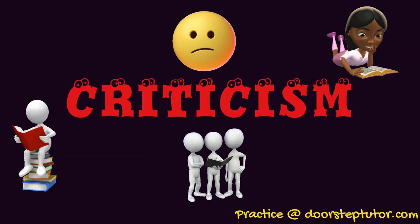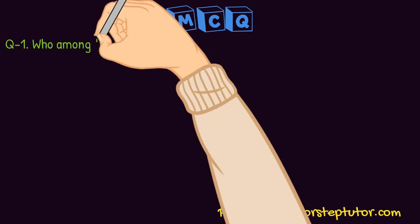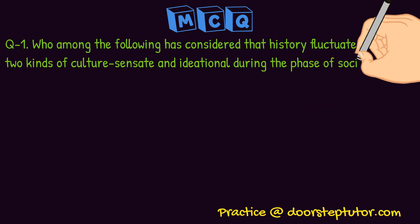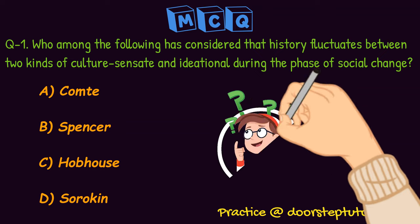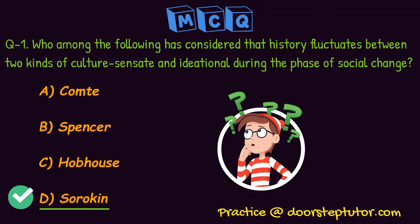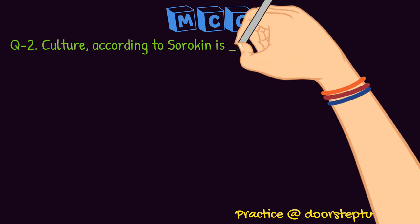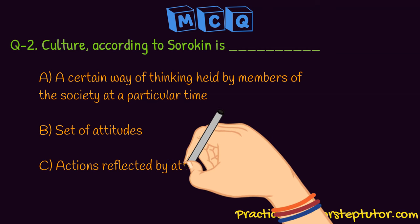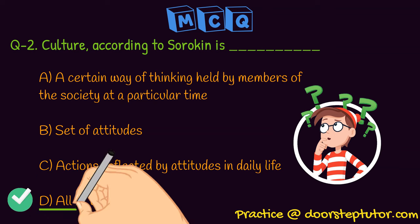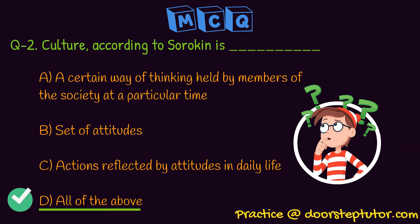According to Raymond Aron, it is impossible to quantify Sorokin's theory, but simultaneously it has an advantage that it can be understood very easily. Let us discuss some questions now. Who among the following has considered that history fluctuates between two kinds of cultures — sensate and ideational — during the phase of social change? This has been said by Sorokin in his pendulum theory of change. According to Sorokin, culture is a set of thinking held by members of the society at a particular time, a set of attitudes, and the actions reflected by attitudes in daily life. Therefore, the answer will be option D.